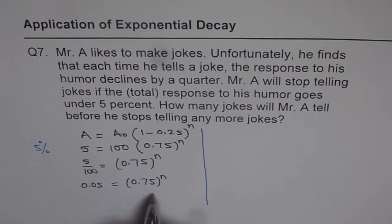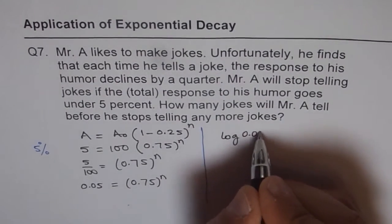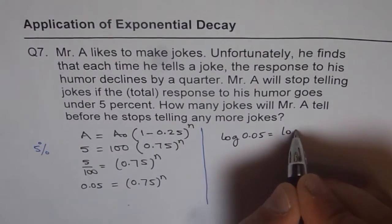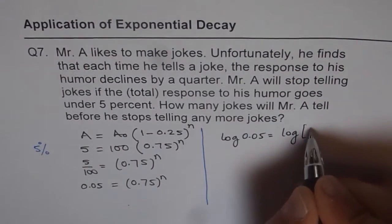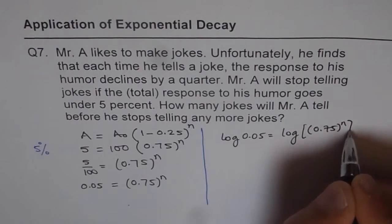And we can always take log on both sides and then solve. Let me show you that way. So if we take log on both sides, log of 0.05 equals log of 0.75 to the power of n.